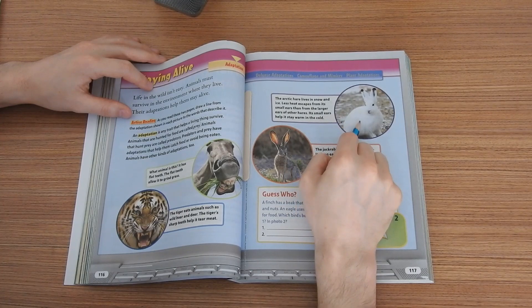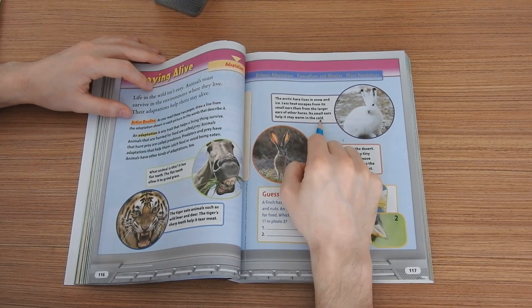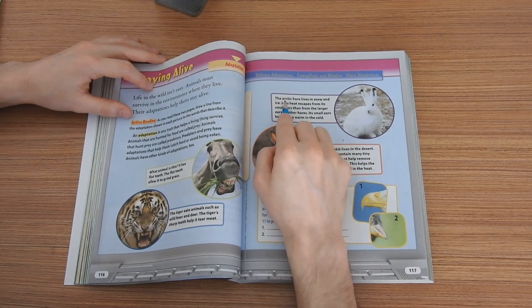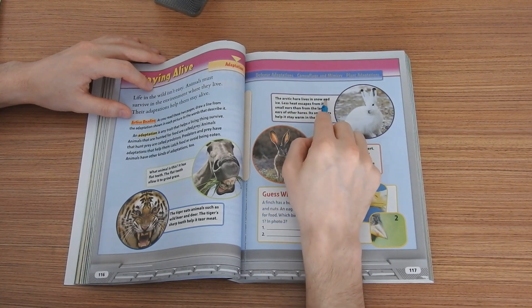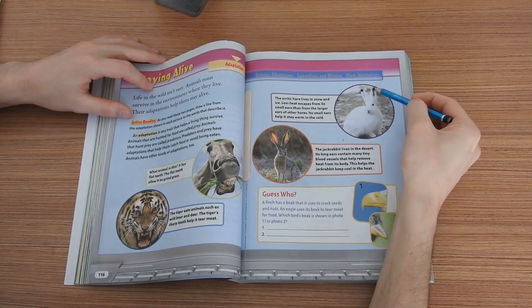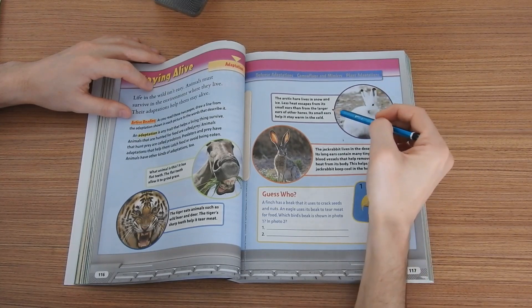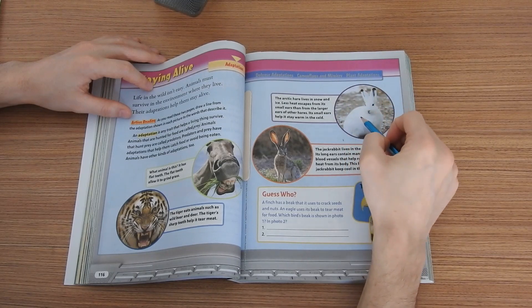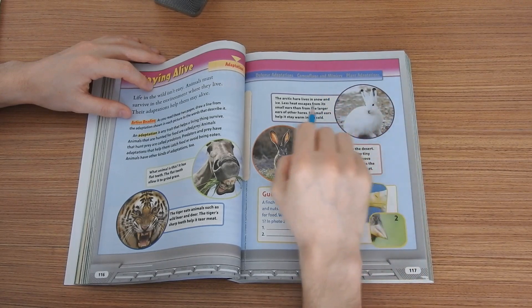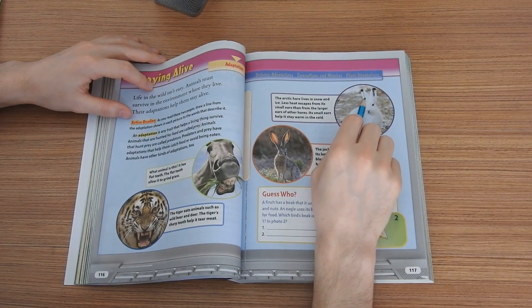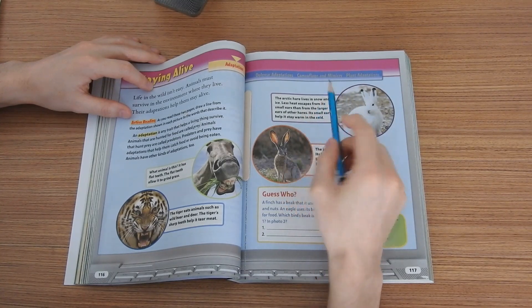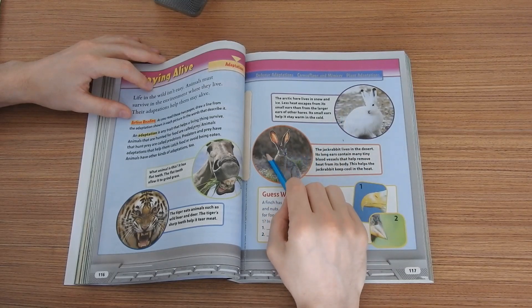So let's continue. Less heat escapes from its small ears than from the larger ears of other hares. Its small ears help it stay warm in the cold. So basically we said that this animal lives in cold areas. What kind of areas? Basically in the beginning of the text said the arctic. Okay so he lives in snow and ice and has small ears. Why? Because he needs to be warm inside. He needs to be hot. That's why the small ears do not let heat escape from its body.